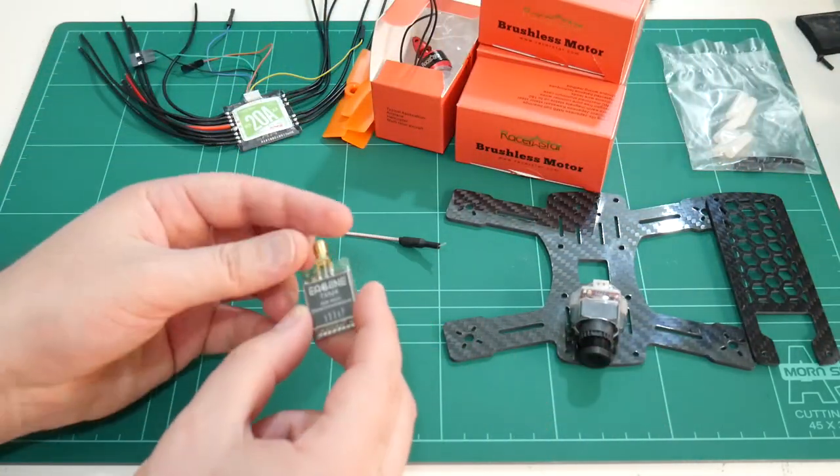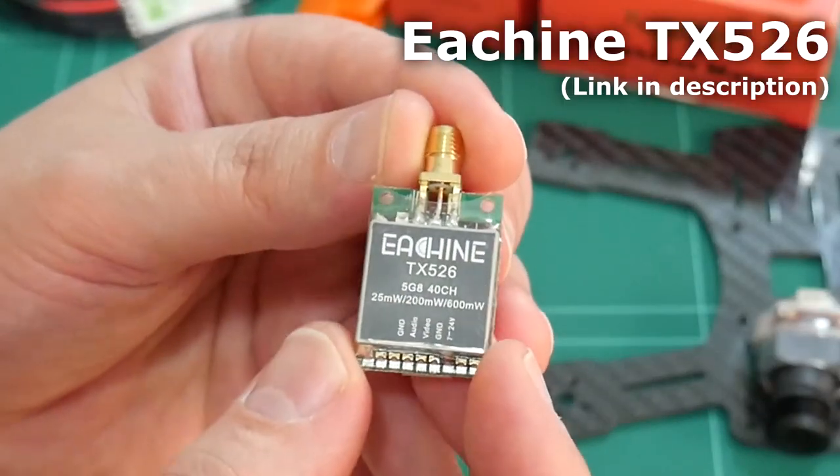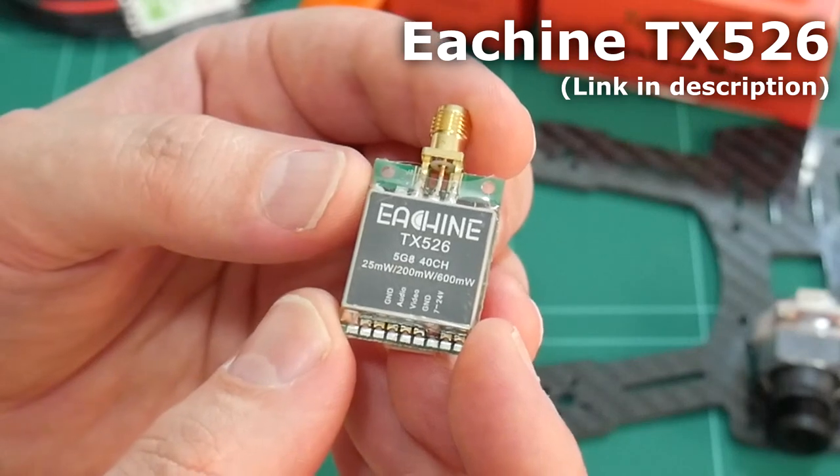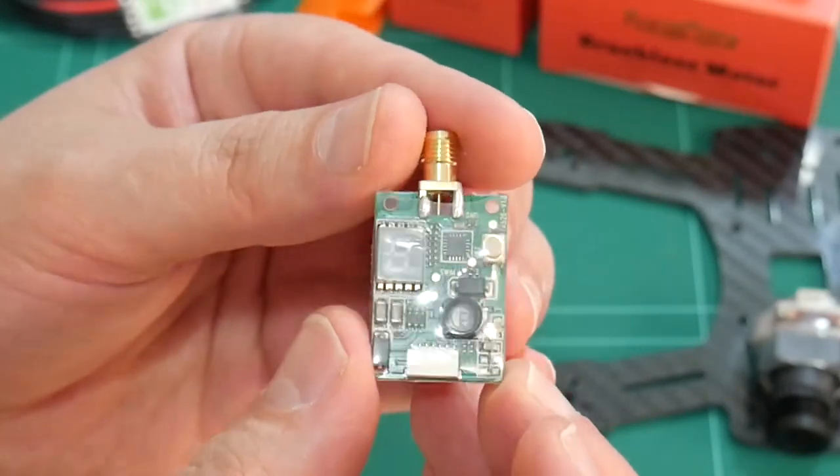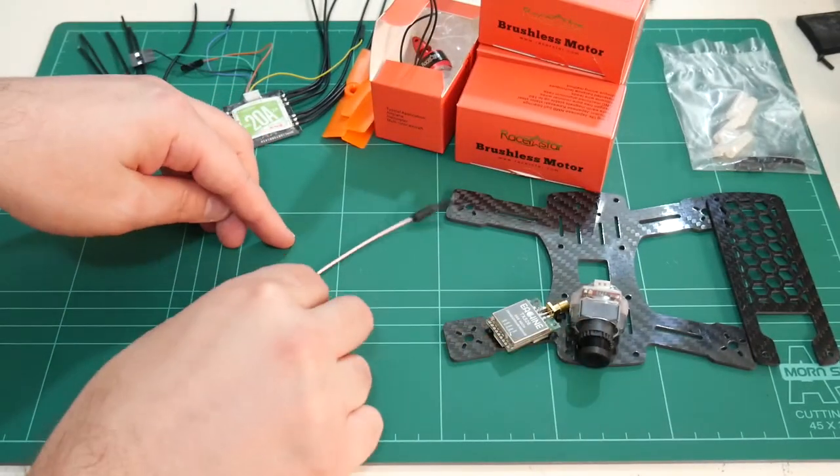For the 5.8 gigahertz video transmitter, I'll be using an I Ching branded one here. It's selectable in its power output between 25 milliwatt, 200 milliwatt, and 600 milliwatt. Just for an antenna at this stage, I'll just be using a basic dipole antenna just to save a bit of weight.